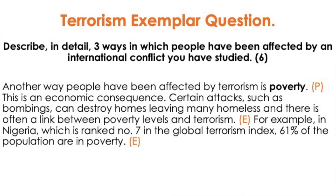Another paragraph you could use to answer this question: Another way people have been affected by terrorism is poverty. This is an economic consequence. Certain attacks such as bombings can destroy homes leaving many homeless, and there is often a link between poverty levels and terrorism. For example, in Nigeria, which is ranked number seven in the Global Terrorism Index, 61% of the population are in poverty.